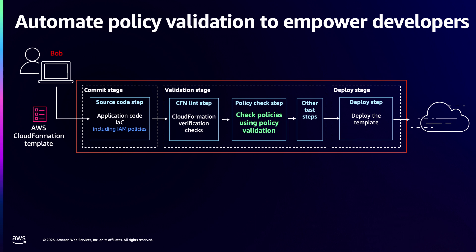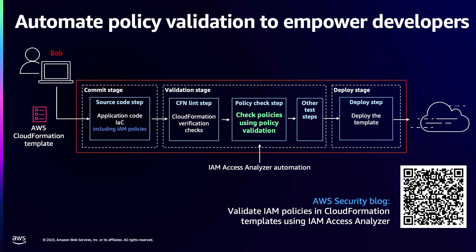If you, as part of the central security team, want to ensure everyone in your organization is using this and making updates based on issues that come up, you can easily incorporate this in your CI/CD pipeline and pass or fail changes being pushed out based on the issues that show up. This is a great way for the dev team and security team to collaborate without investing too much time. There is a blog that walks you through all the steps to call the APIs in your CI/CD pipeline.